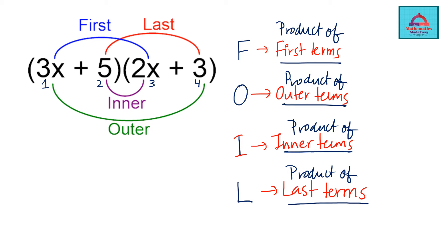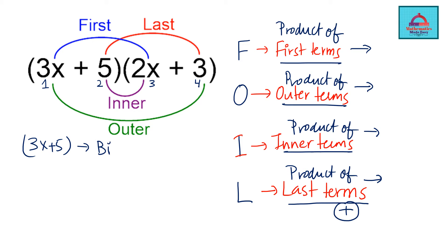After we get these products, as you will see in this example, we are going to add everything to get our final answer. So let's see the first example. The first binomial is 3x plus 5 — it is a binomial because it has two terms. The second binomial is 2x plus 3.